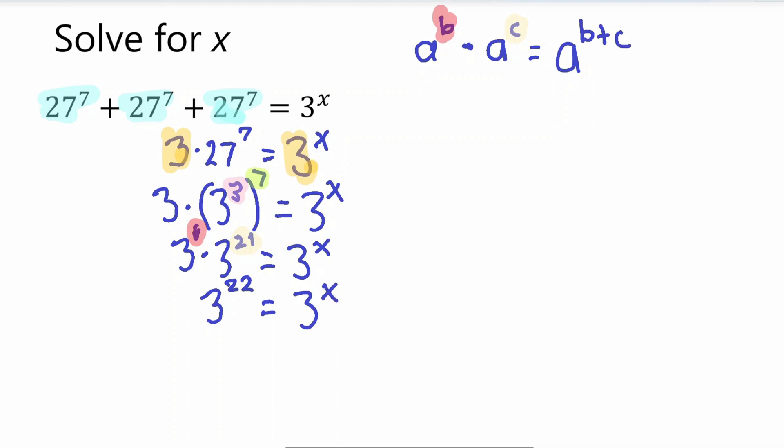So 3 to the power of 22 is equal to 3 to the power of x. And we have the same bases both here. So whenever we have the same bases, we can just drop the bases. So that will just give us. We drop the bases, take them away. 22 is equal to x.